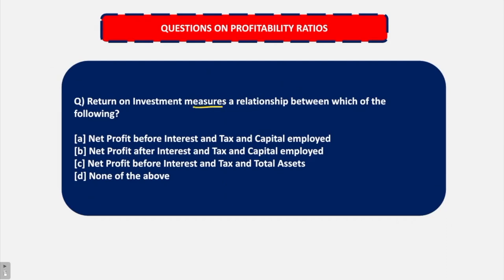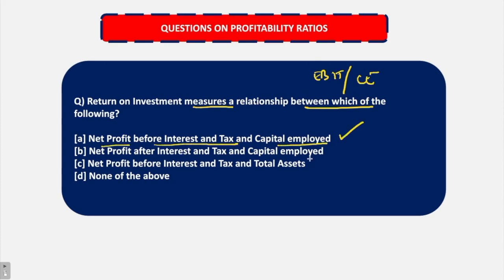Return on investment measures a relationship between which of the following? Return on investment tells us the ratio of EBIT upon capital employed — net profit before interest and tax and capital employed. So this is our answer. Not after, before. Net profit before interest and tax and total assets — total assets are not included here; it is capital employed. So the answer is A.